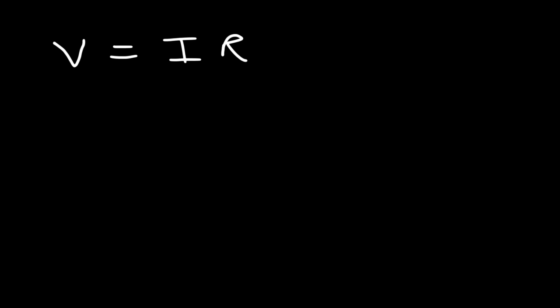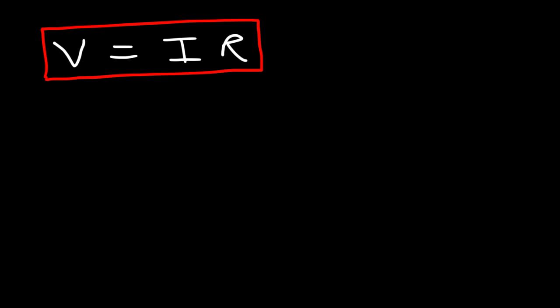Perhaps you've seen this equation: V is equal to I times R. V stands for voltage, I stands for the current, and R is resistance.